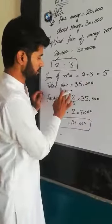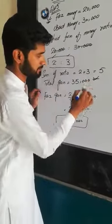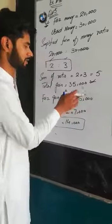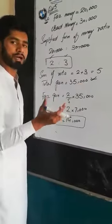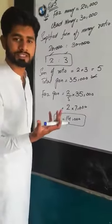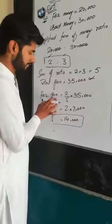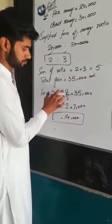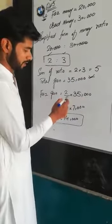The total gain is 35,000 rupees. Now we divide the ratio: Ubaid will get his share and Faiz will get his profit from the total. First, Faiz's gain is 2 over 5, multiplied by 35,000.